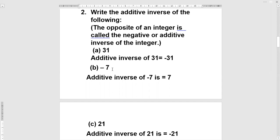Part b, minus 7. Its additive inverse will be plus 7. Part c, 21. And here additive inverse of 21 is equal to minus 21.